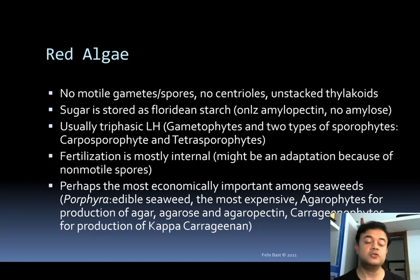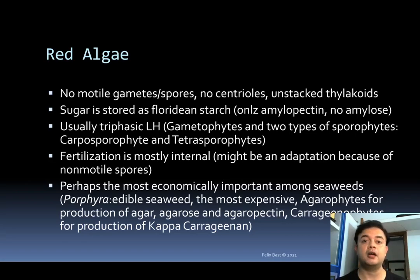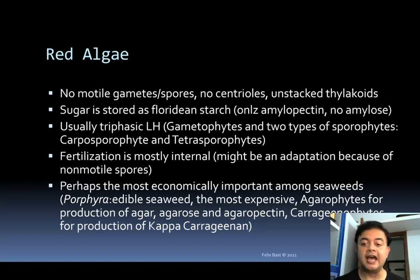Red algae is really important economically — perhaps the most economically important among all algal divisions is Rhodophyta. Porphyra is the most expensive algae in the world because of its huge demand in the nori industry, sushi industry, and onigiri — all Japanese foods that are wrapped in sheets of Porphyra, the red seaweed, which is commercially cultivated in Japan and many other countries.